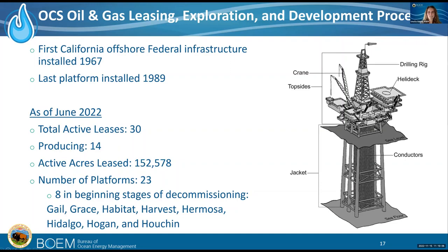The first offshore California infrastructure was installed in 1967 — Platform Hogan. The newest platform was installed in 1989 — Platform Heritage. There are eight platforms currently in the beginning stages of decommissioning. On the right is a simplified platform diagram showing the conductors or wells, the top sides which are the facilities above sea level, and the jacket — the outer portion from the seafloor to sea level.